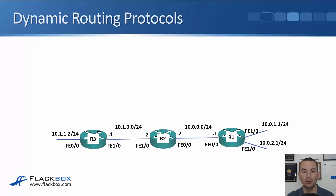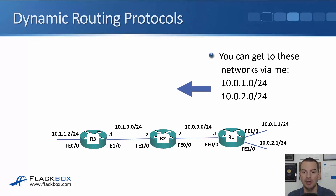What we'll do is configure a routing protocol on R1, R2, and R3, and they will then share information about their networks with each other. Once we do the configuration, R1 and R2 form a peering relationship with each other, and R2 and R3 also form an adjacency.